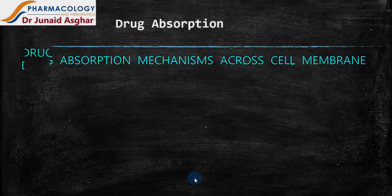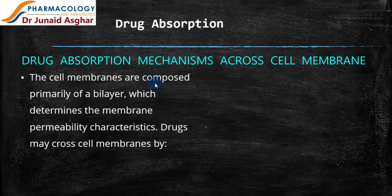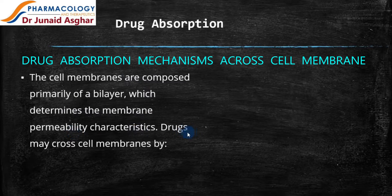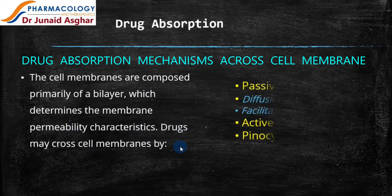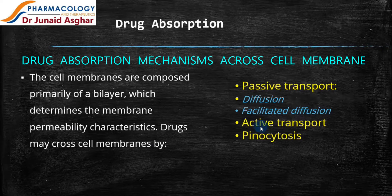Let's have a look at the different means of drug absorption across the biological membrane or the plasma membrane. The cell membranes are composed primarily of a bilayer, which determines the membrane permeability characteristics. Drugs may cross the cell membrane by different ways — for example, passive transport, which includes diffusion and facilitated diffusion, active transport, and pinocytosis.